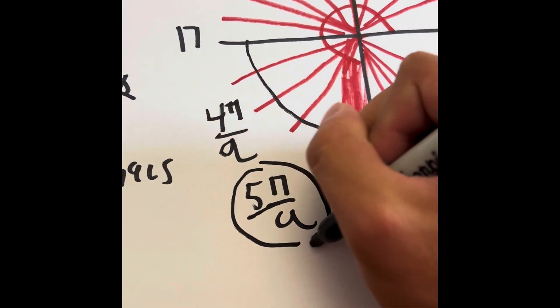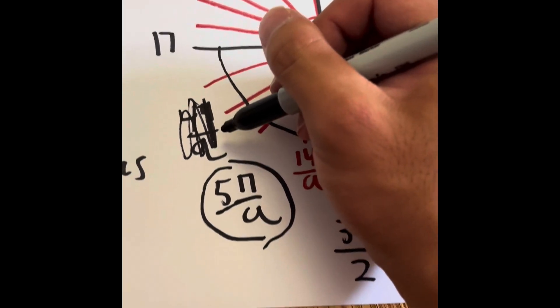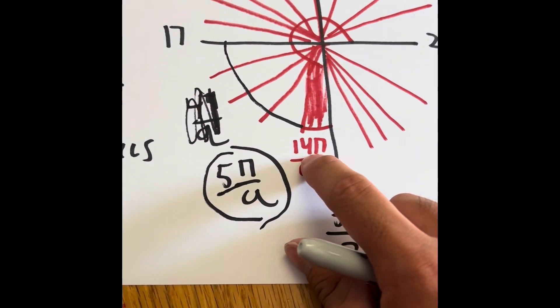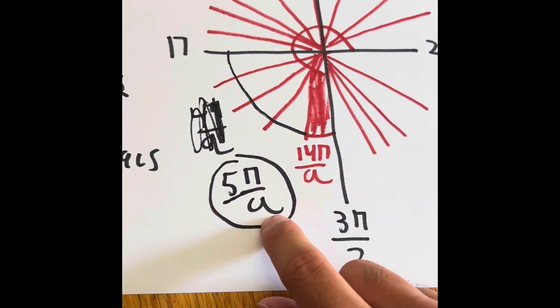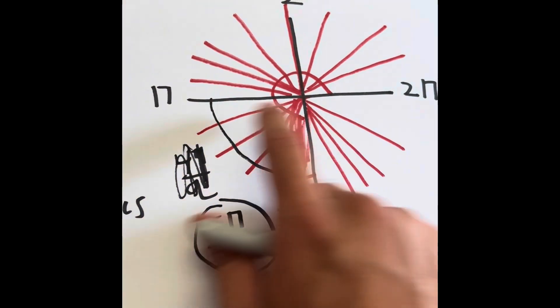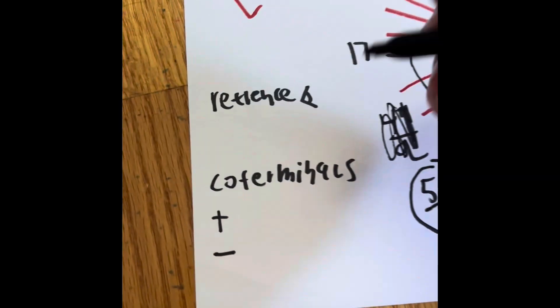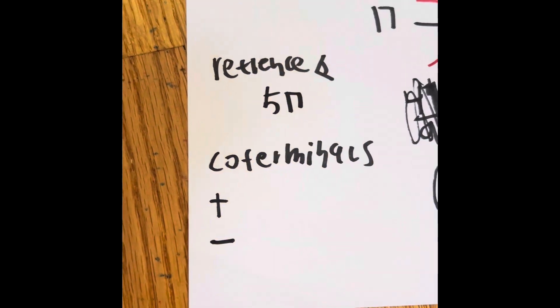If you do 14 minus 5, you get 9, and 9π divided by 9 is half of the circle, which means it's touching the x-intercept. So that is going to be our reference angle. What about the coterminals?